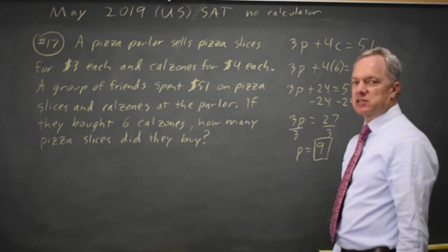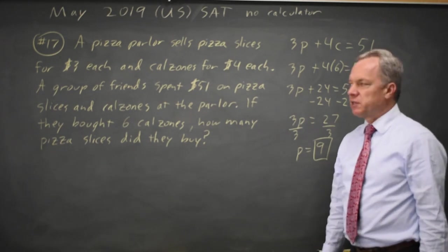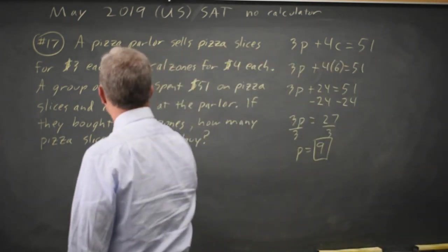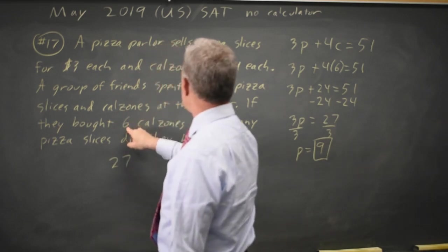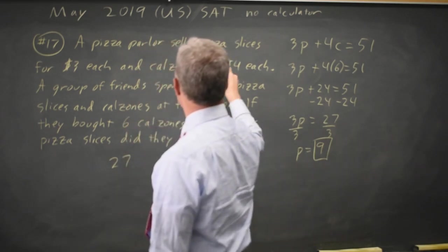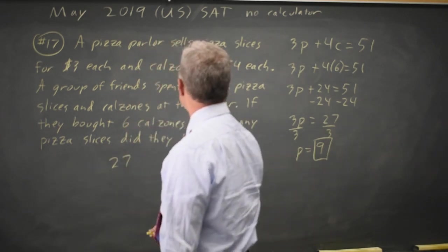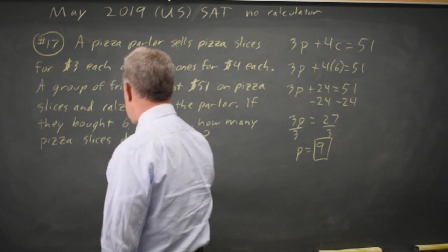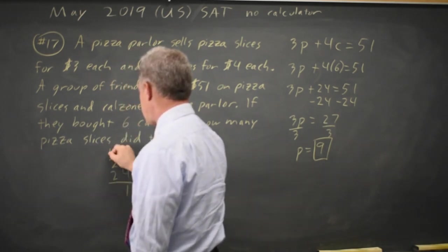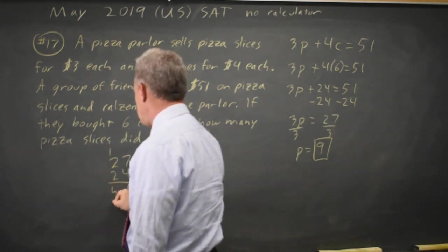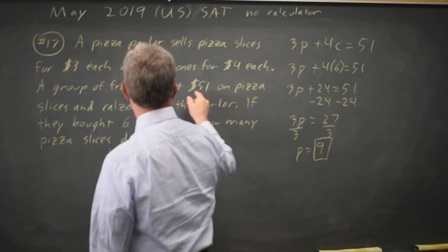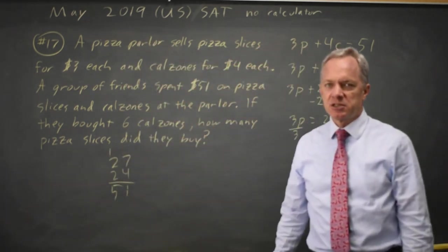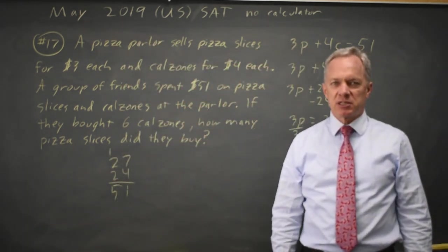We bought 9 slices of pizza. And checking that: 9 times 3 is 27. 6 calzones times $4 per calzone is 24. 27 plus 24 — 4 plus 7 is 11, carry the 1 — is 51, which is the total amount they spend on pizza and calzones. So that answer would be correct.